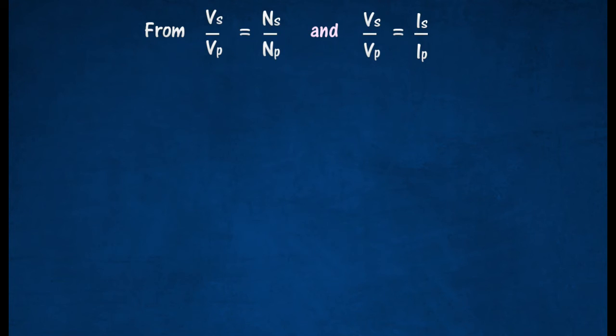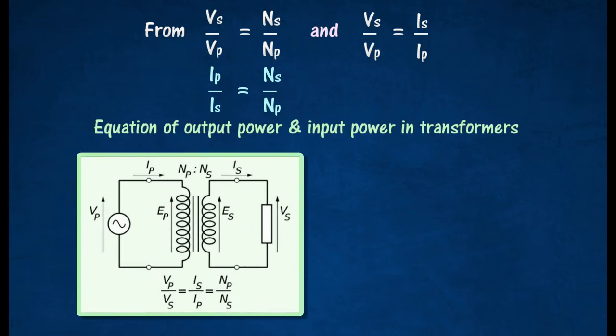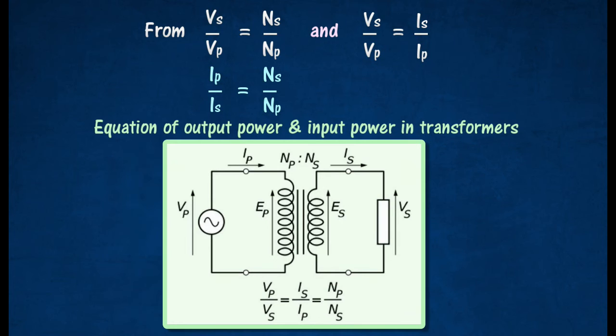From the relationship between the voltage and the number of turns in each coil, the relationship between the current and the number of turns can be derived. The equations are only true for an ideal transformer, that is a transformer in which no energy is lost while power is being transferred from the primary coils to the secondary coils.